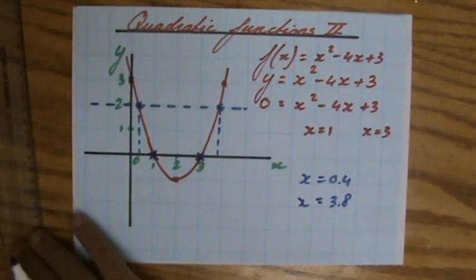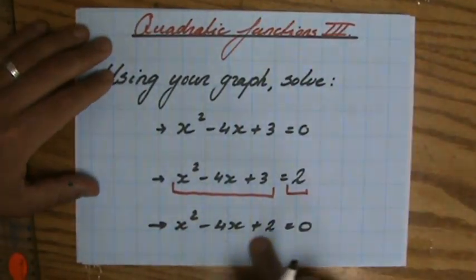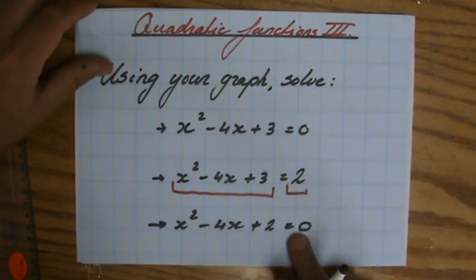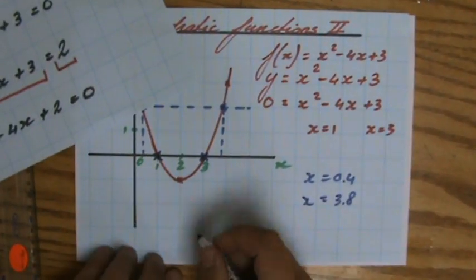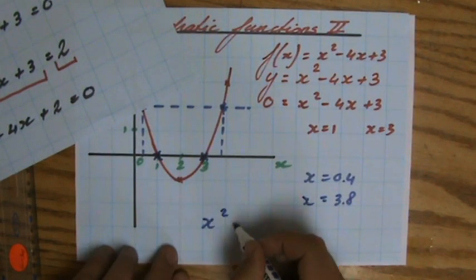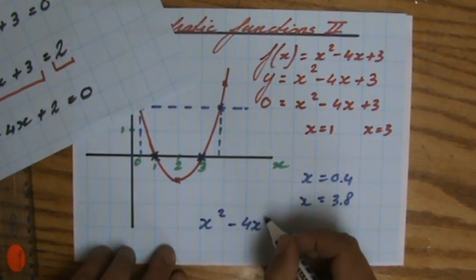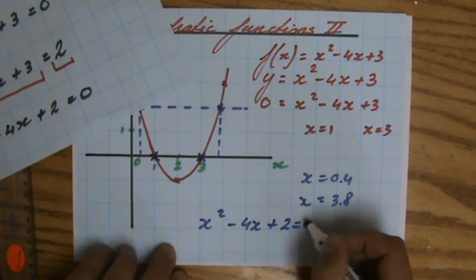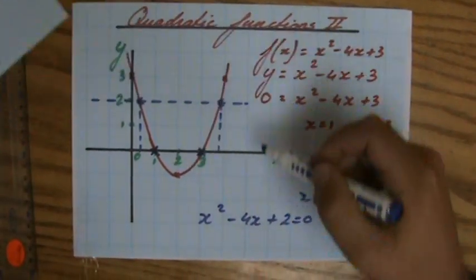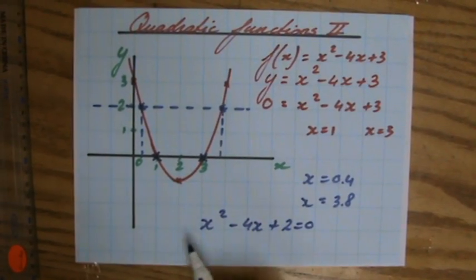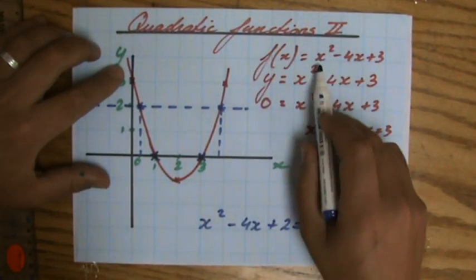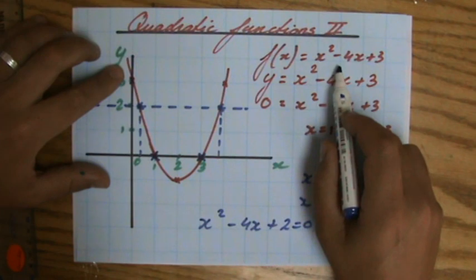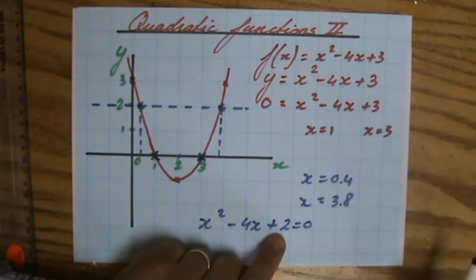Alright. Now moving on to the last question here. x squared minus 4x plus 2 equals 0. And I have to use my graph. And I'm going to write that question here. x squared minus 4x plus 2 equals 0. And I have to use my graph to solve this equation. Now that is a little bit funny. Because if I have to use my graph, my graph is x squared minus 4x plus 3. But here it says plus 2.